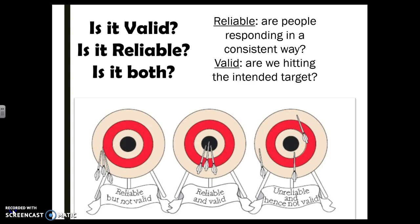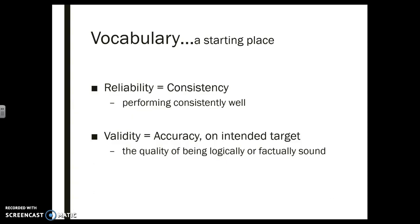With validity and reliability, reliability is consistency. Over here on the left, all of these arrows are hitting the same spot — they are consistent, therefore reliable. The problem is they're not on target, so they're not valid. We want the middle one: reliability, consistency, and accuracy. Validity is all about accuracy and being on the intended target — are we doing what we think we're doing?